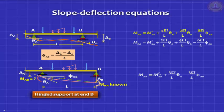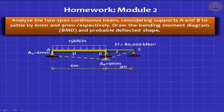We did many examples demonstrating the use of these slope deflection equations. We also gave you one assignment at the end of the last session. We asked you to solve this problem, a simple two-span continuous beam with applied loading and with settlement. So let us quickly go through this problem. We asked you to draw the bending moment diagram and the probable deflected shape.